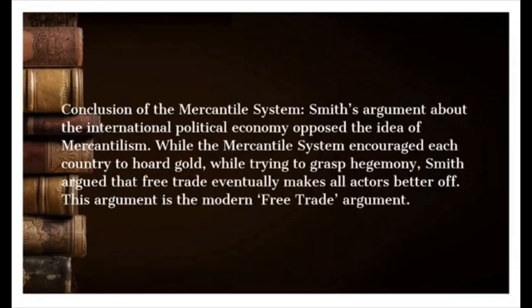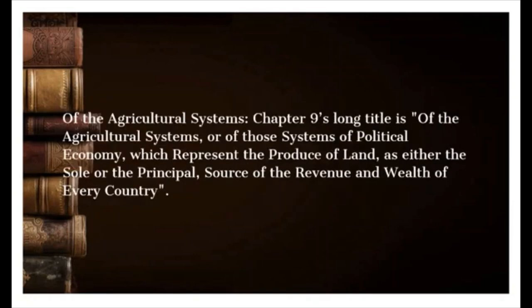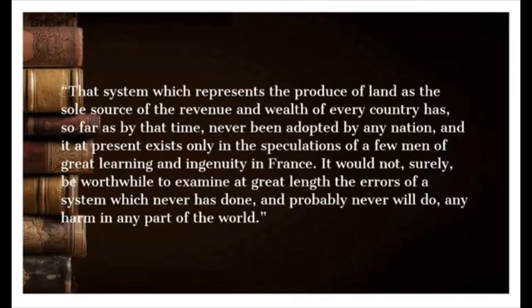Conclusion of the mercantile system: Smith's argument about the international political economy opposed the idea of mercantilism. While the mercantile system encouraged each country to hoard gold while trying to grasp hegemony, Smith argued that free trade eventually makes all actors better off. This argument is the modern free trade argument. Of the agricultural systems: chapter 9 concerns systems of political economy which represent the produce of land as either the sole or the principal source of the revenue and wealth of every country. This system has never been adopted by any nation and exists only in the speculations of a few men of great learning and ingenuity in France.